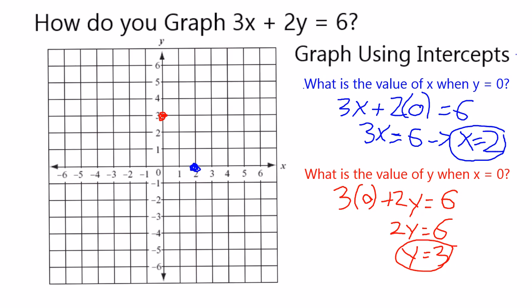Now having those two points, that's enough to determine our line. If I draw a straight line between them, I have now the graph of my equation, 3x plus 2y equals 6.